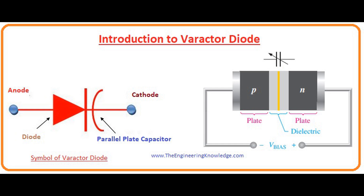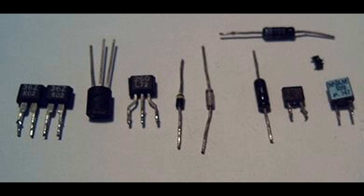Applications of varactor diode — Voltage-controlled oscillators (VCOs): Varactor diodes are used to vary the frequency of oscillation in VCOs. Applications include RF signal generators, communication transmitters, and receivers.